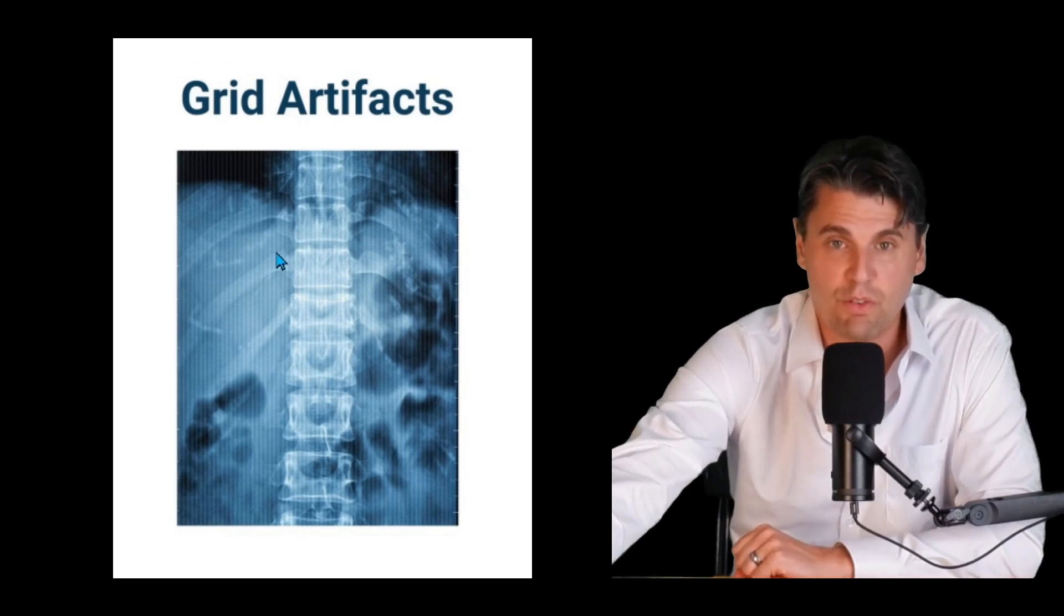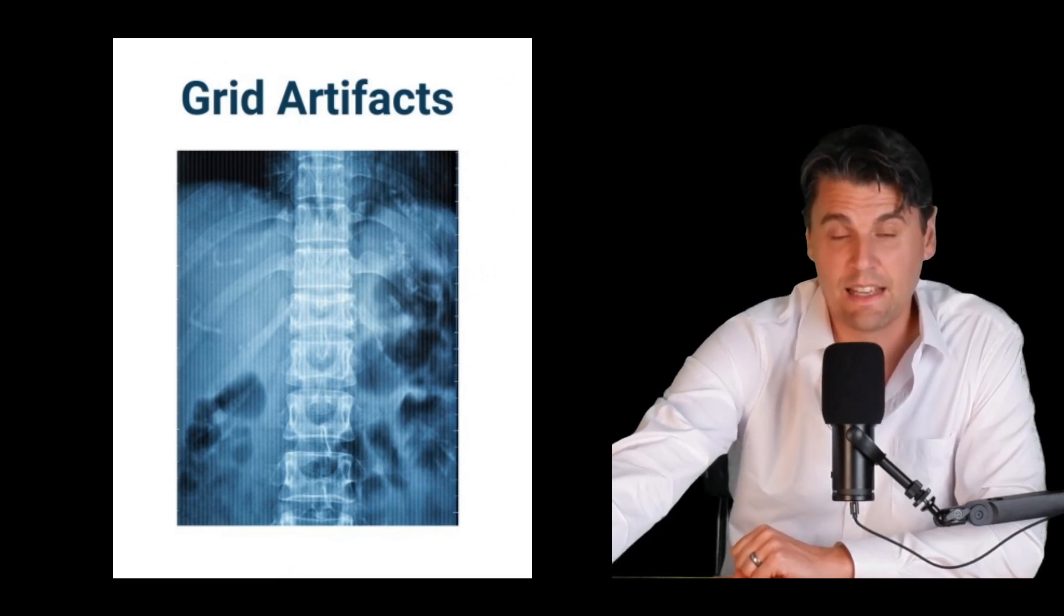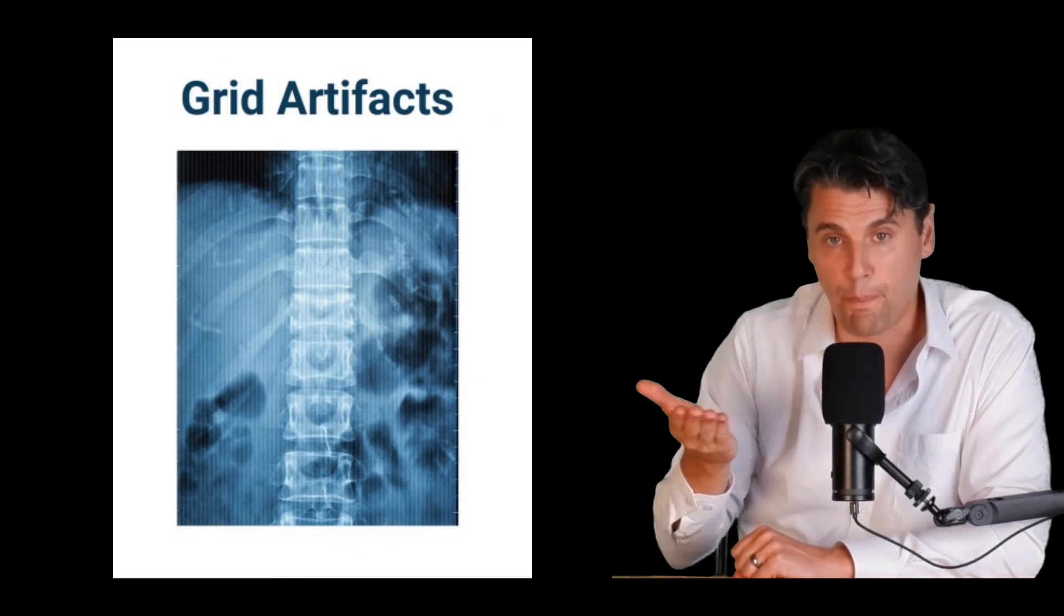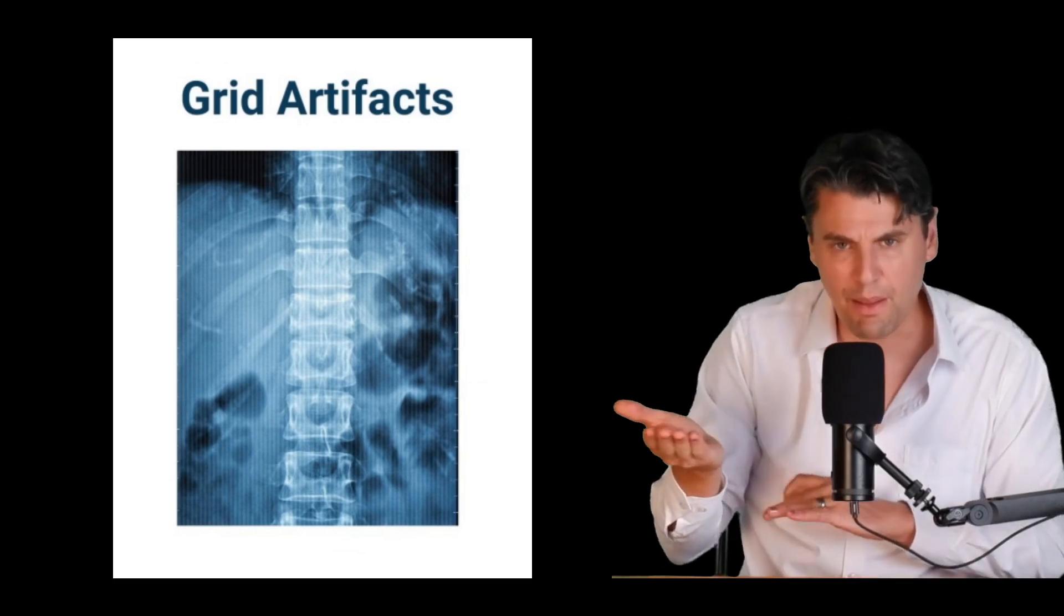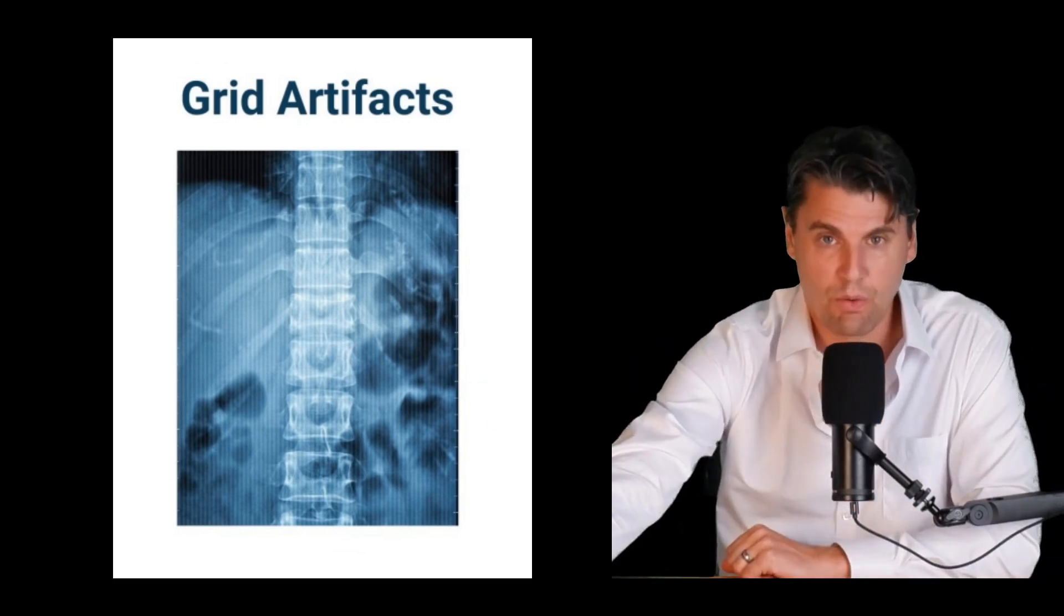Another thing you can have is grid artifacts. If you're using an x-ray grid this is an artifact in the up down direction here and if there is not either a software or motion of the grid in order to essentially blur out the grid lines you could get grid lines on your images.